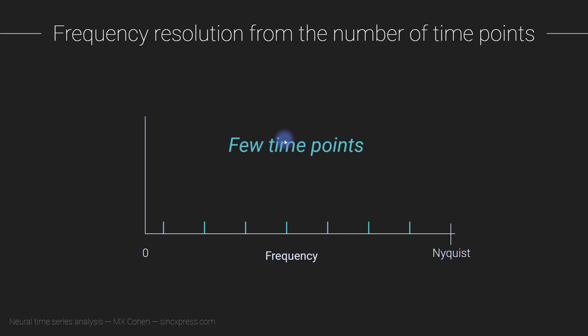Here we have a short signal with only a few time points, which means we have pretty sparse frequency sampling. Now imagine what happens if we take more time points from that same signal. Well, n is now higher, so zero hasn't changed, the Nyquist frequency hasn't changed because we still have the same sampling rate, but we have more points between zero and Nyquist so the frequency resolution is higher.